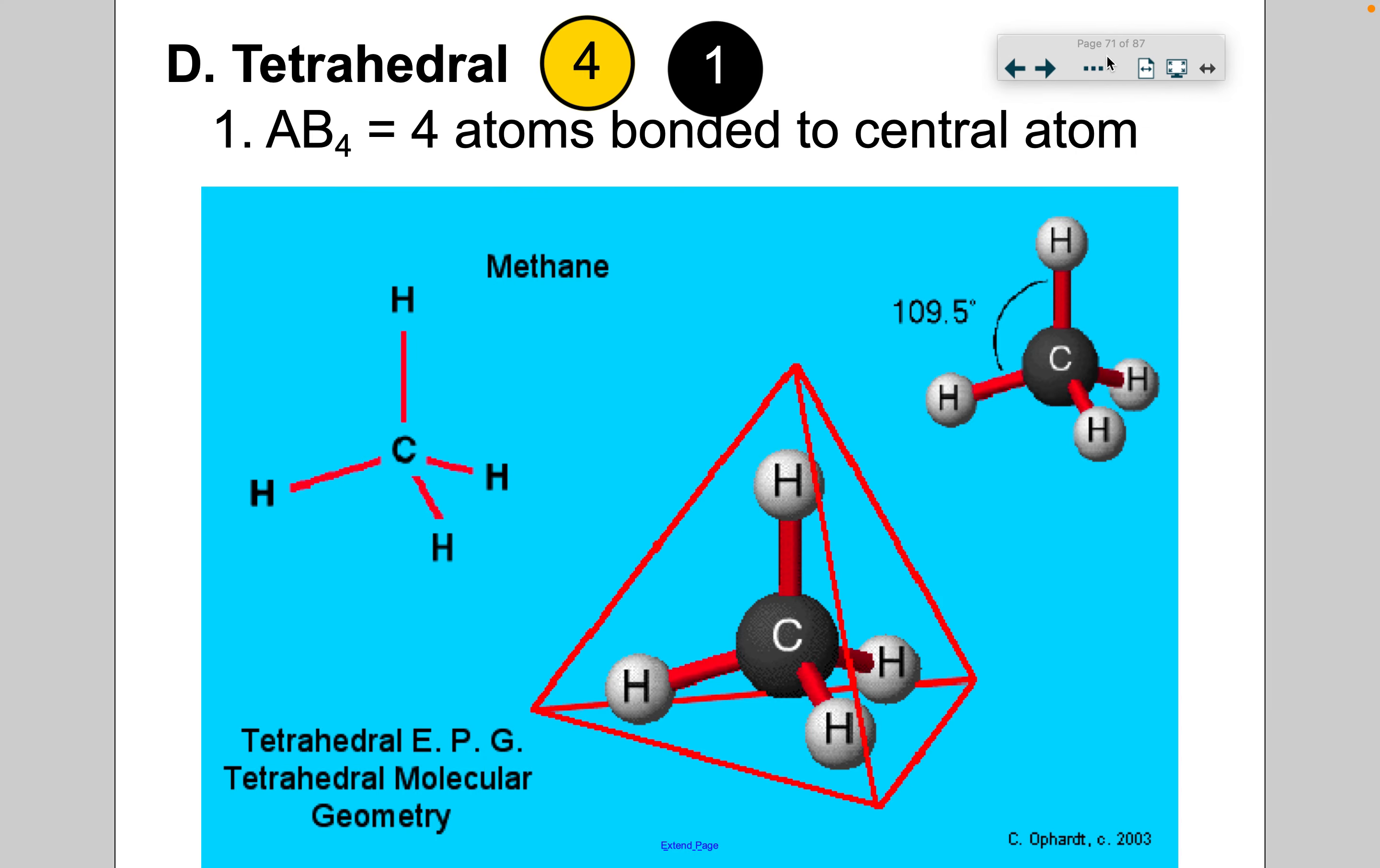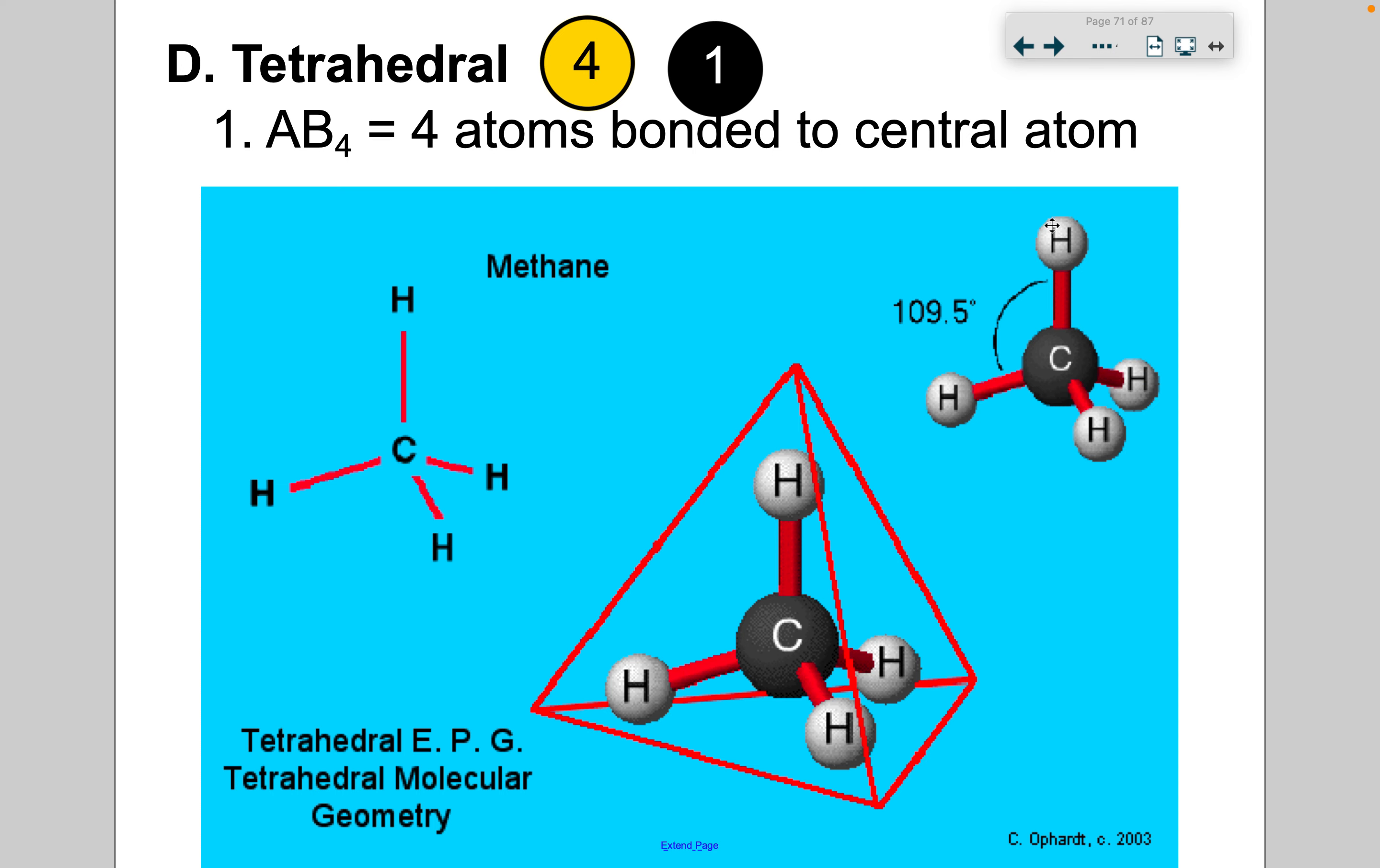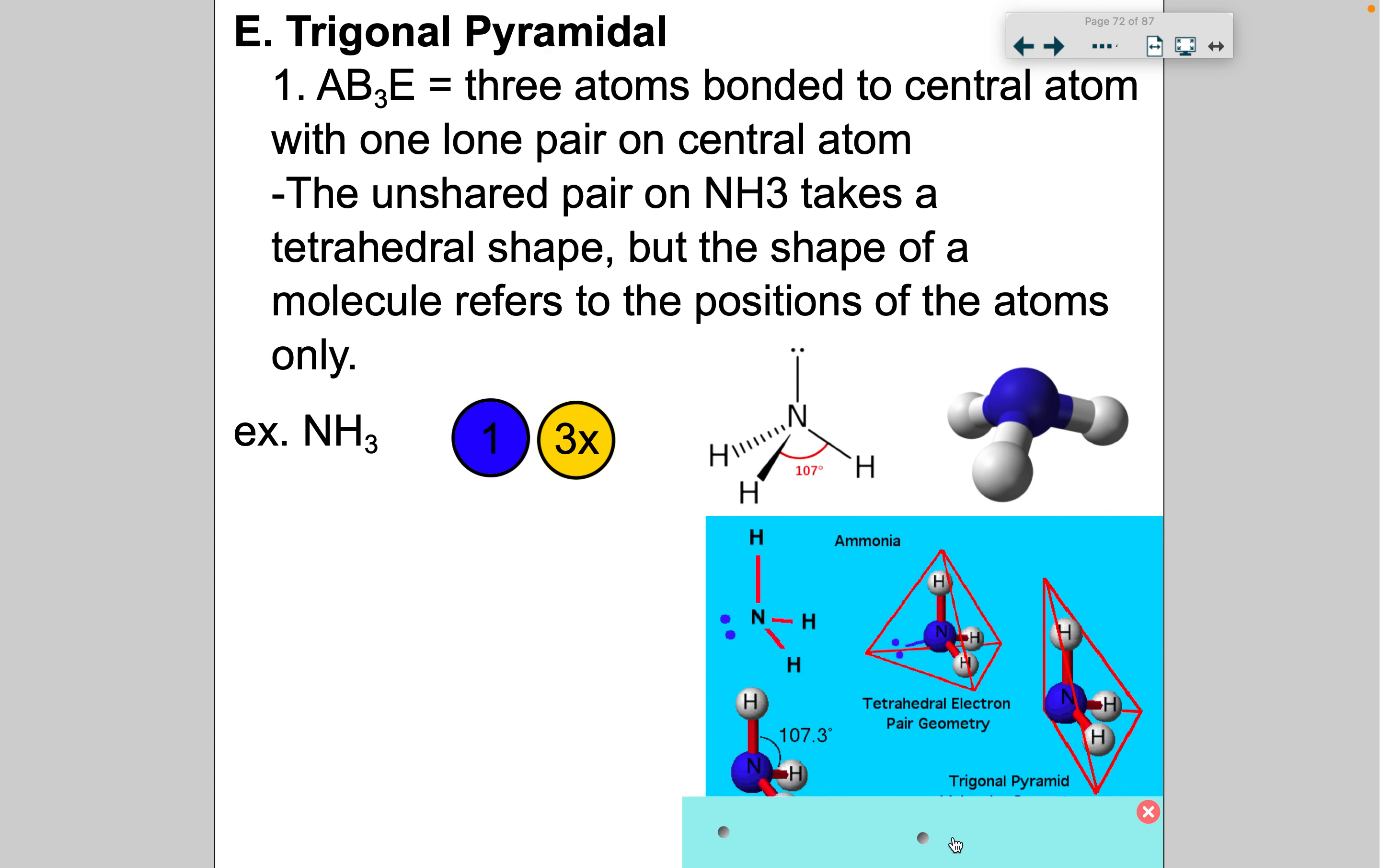Another shape for the VSEPR theory is tetrahedral, and this one's pretty easy to recognize. It's an AB4. You have four atoms bonded to the central, so methane gas, CH4. And you can kind of see it. It's kind of like a pyramid shape in a way. Another shape for the VSEPR theory is trigonal pyramidal, and its format is an AB3E. So that means we have three atoms bonded to the central atom, and then a lone pair on that central atom. And a great example is NH3. We have an unshared pair on nitrogen, and it kind of takes the tetrahedral shape. There's just no top, so that lone pair is at the top. But the tripod on the bottom is very similar to the bottom part of the tetrahedral. There's just nothing bonded to the top. That's where the lone pair sits. So it's like a tripod.